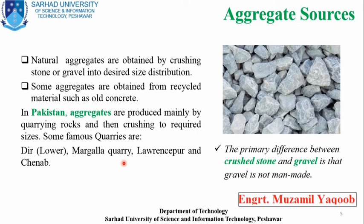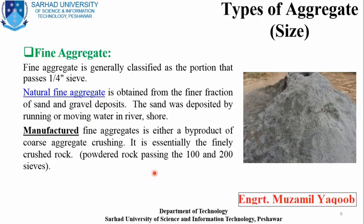The basic difference between crushed stones and gravel is that gravel is not man-made — it is natural — while crushed stones are made from different materials. Now, based on size, we have two categories of aggregates: the first is fine aggregate, and the second is coarse aggregate.